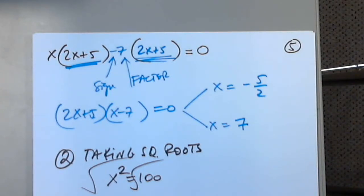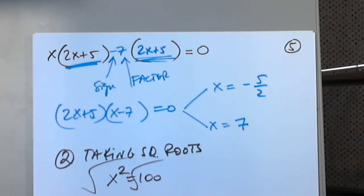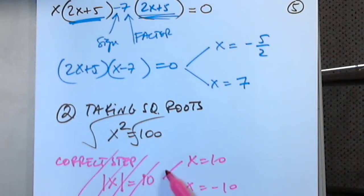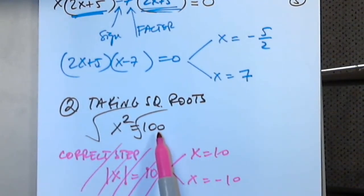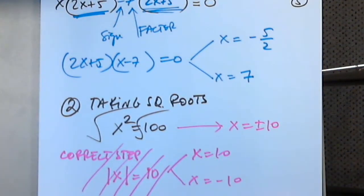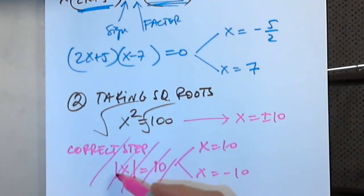How many solutions do we have to get? Two. The square root of x squared is the absolute value of x. The square root of 100 is 10. So the absolute value of x equals 10, meaning x equals 10 or x equals negative 10. The method says: write x equals plus or minus 10. But remember, the square root of 100 is only 10 — the plus or minus comes from the absolute value side.